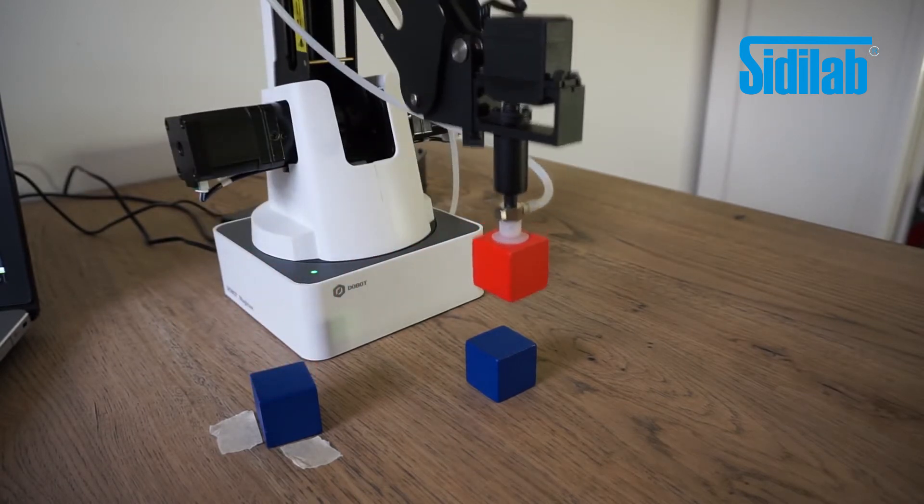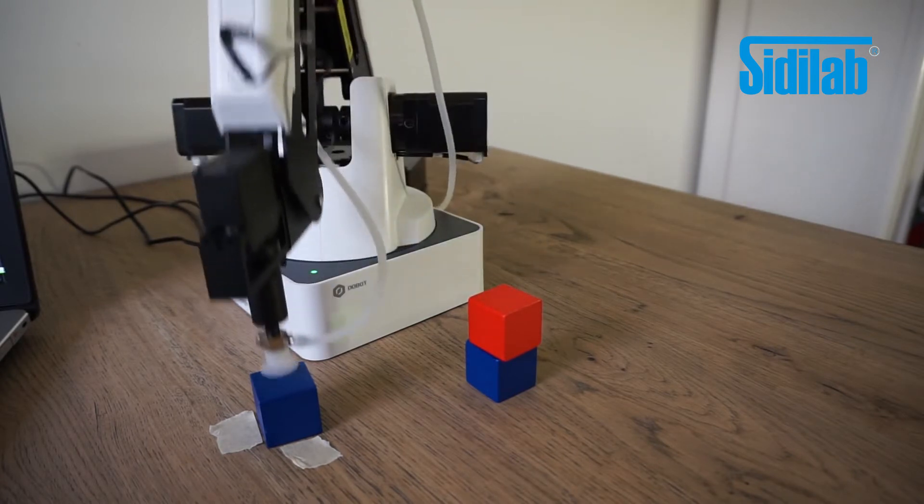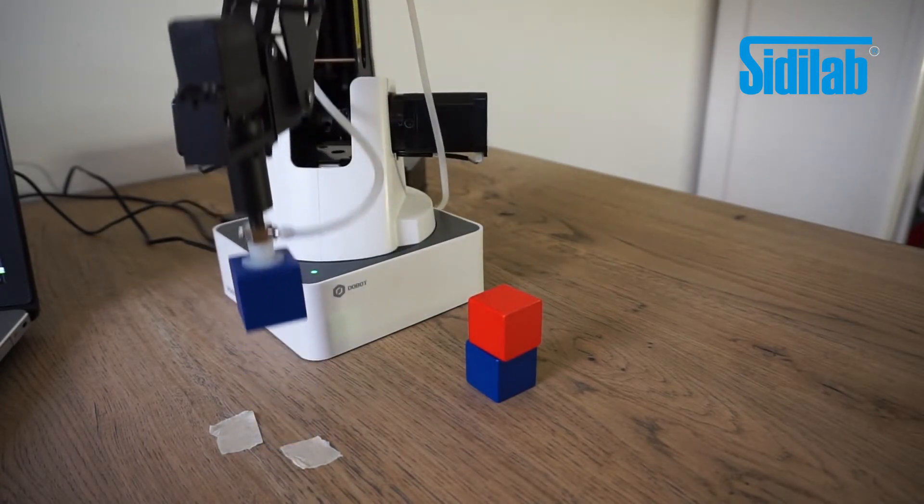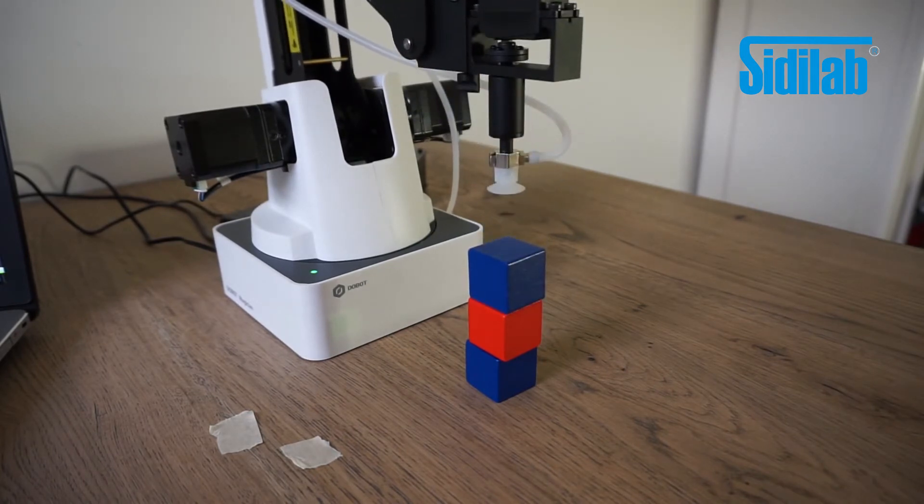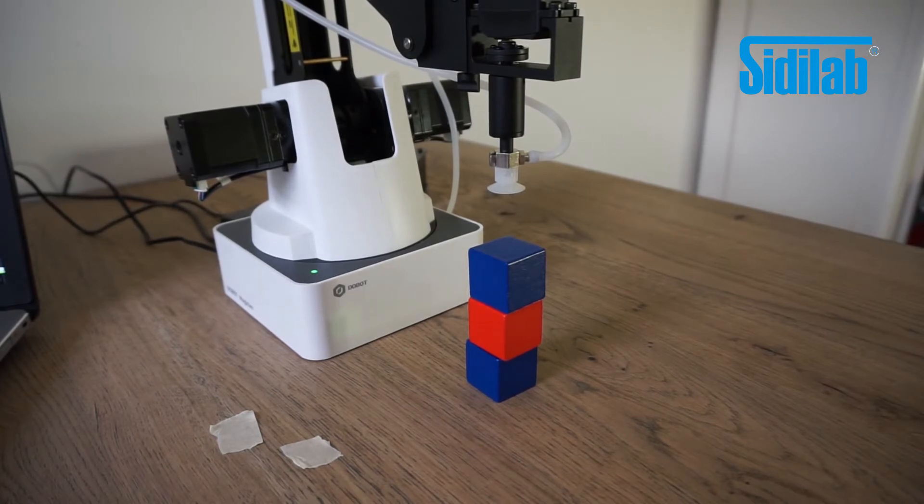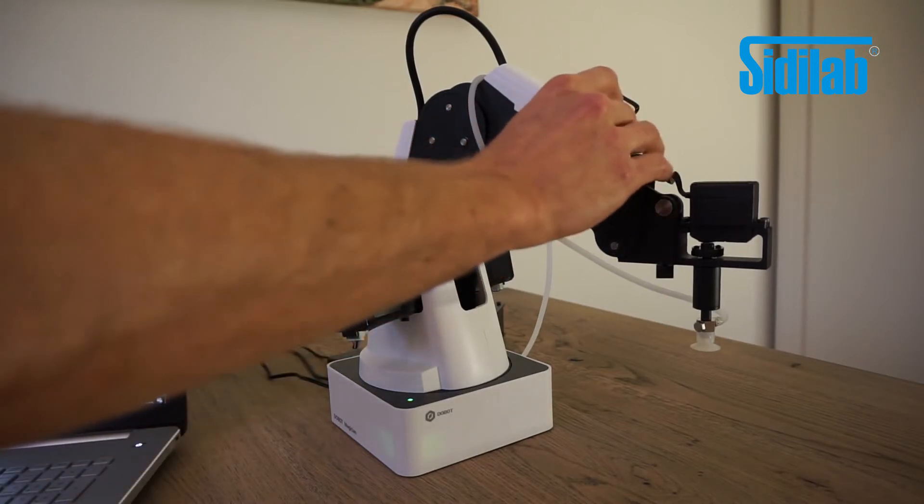As you can see the second stack is not perfectly aligned but I'm confident that most of this is due to me moving the blocks while teaching the arm and to inaccuracies induced by the vacuum cup. The position repeatability of the arm is much higher than the differences you see here. I think the gripper will be better for accurate positioning but I'll have to test that later.